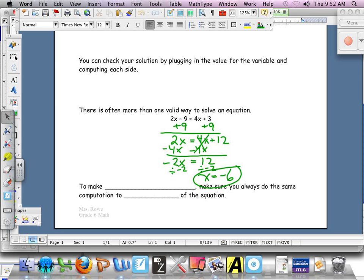So the gist of it is to make equivalent equations, you've got to make sure you always do the same computation to both sides, or to each side. Each side of the equation. You've got to keep it balanced. You've always got to show, I'm going to add 9 to each side, I'm going to subtract this from each side, I'm going to divide this on each side, and so on.